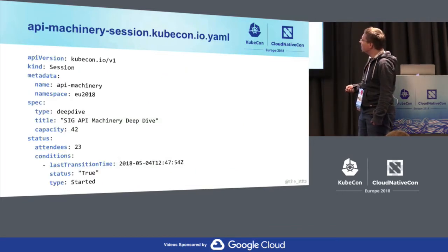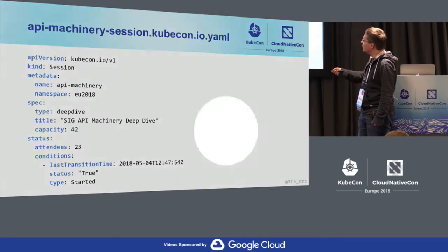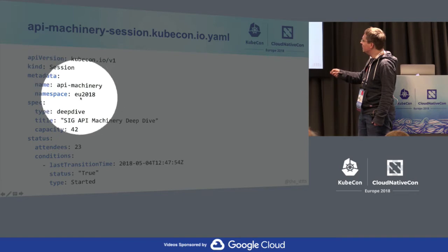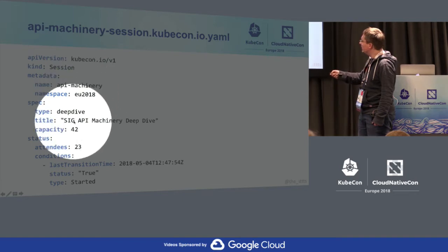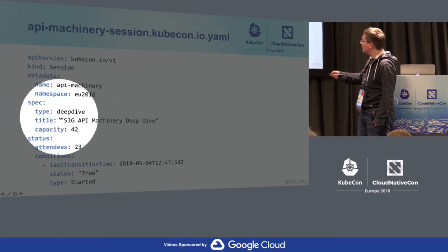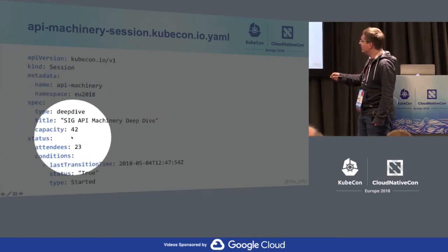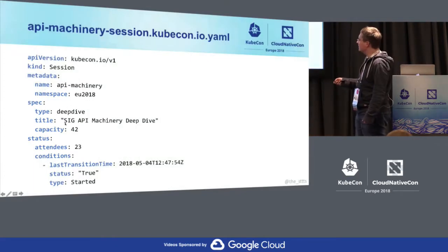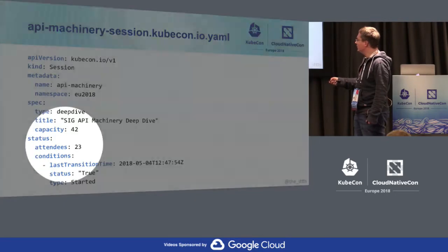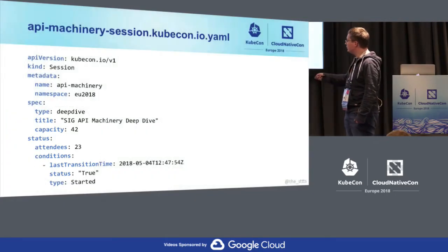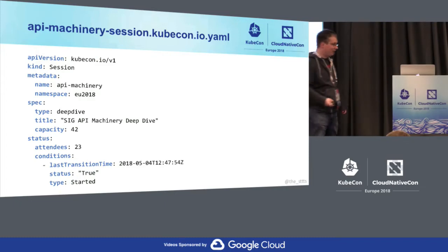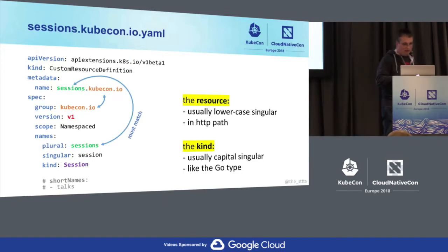Here's an example of a CRD — it's about sessions, KubeCon sessions. This one is API Machinery at Copenhagen, type is deep dive, capacity 42, attendees 23, and some conditions. That's a typical CRD you can write.